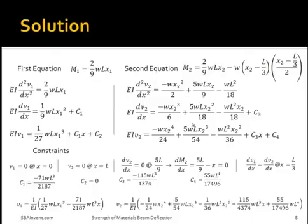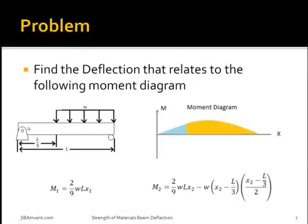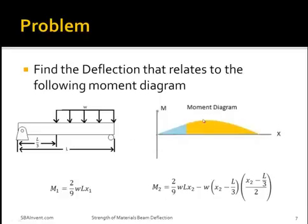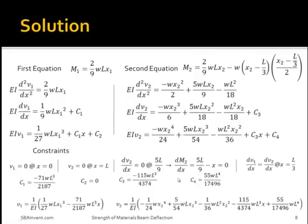Once those moment equations have been integrated, you need to determine what the constraints are due to the boundary conditions. For a simply supported beam, there would be no deflection at both support points, so that would be x equals 0 and x equals L. And there would be no rotation where the maximum moment occurs. To determine the maximum moment, you would take the derivative of the second moment equation, set that equal to 0, and then solve for x — which in this case gives the maximum moment at 5L/9.